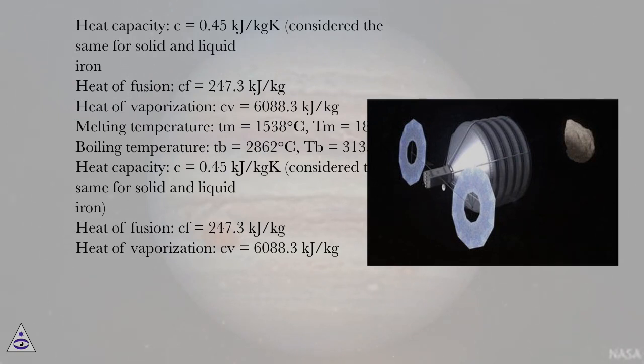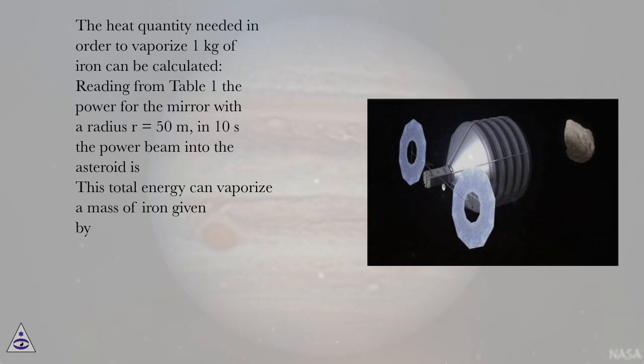The heat quantity needed in order to vaporize one kilogram of iron can be calculated. Reading from table 1 the power for the mirror with a radius R = 50 meters, in 10 seconds the power beam into the asteroid is calculated.